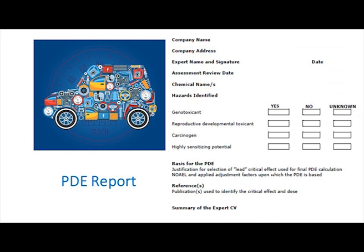Let us see the parts of a PDE report. It contains company name, company address, toxicologist's name and signature and date, assessment review date, and the chemical name for which PDE is calculated. The next section is hazards identified, which includes whether the chemical is a genotoxic, whether the chemical is a reproductive or developmental toxicant, whether the chemical is a carcinogen, and whether the chemical has highly sensitizing potential. The next part is the basis for the PDE, where the expert must provide justification for the selection of lead critical effects used for the final permissible daily exposure limit calculation, and the NOAEL and applied adjustment factors upon which the daily exposure limit is based. Next part is references, and the final part of the report is a summary of the expert's CV.